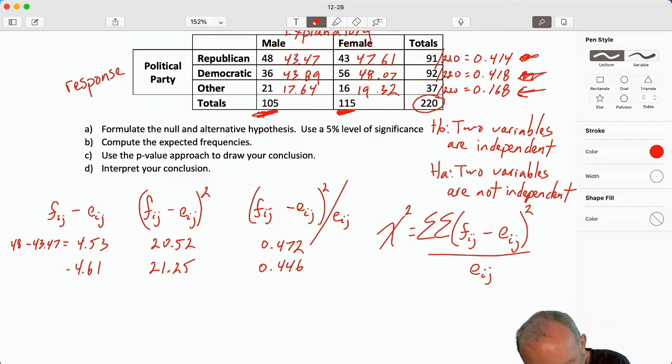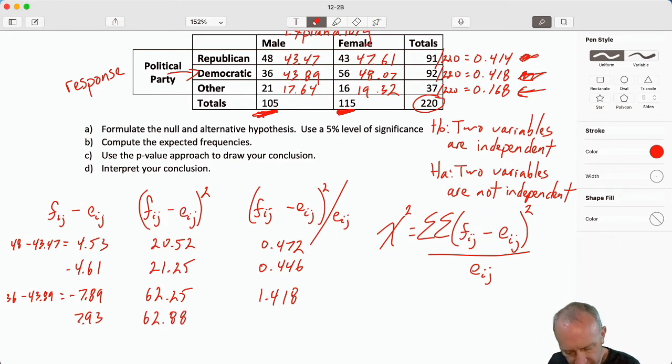Now I'm into the Democratic row. So this first one is 36 minus 43.89, negative 7.89. I square this, 62.25, divide by the expected value, 1.418. Now we move to the females, 56 minus 48.07, 7.893, 62.88 squared, divided by 48.07, and there's 1.308.